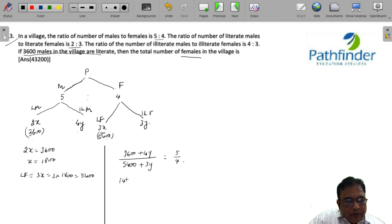So what do you have? 14400 plus 16y is equal to 27000 plus 15y, which means y must be equal to 12600.